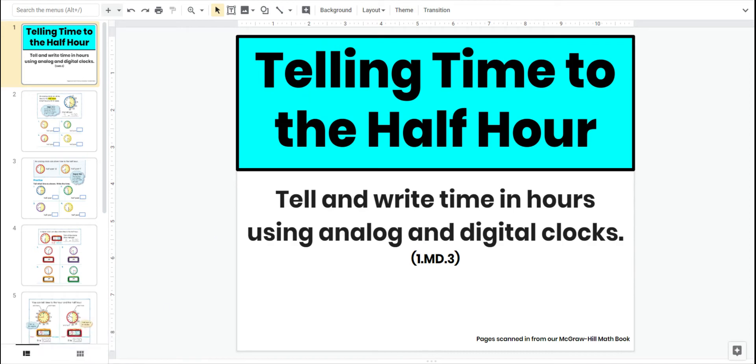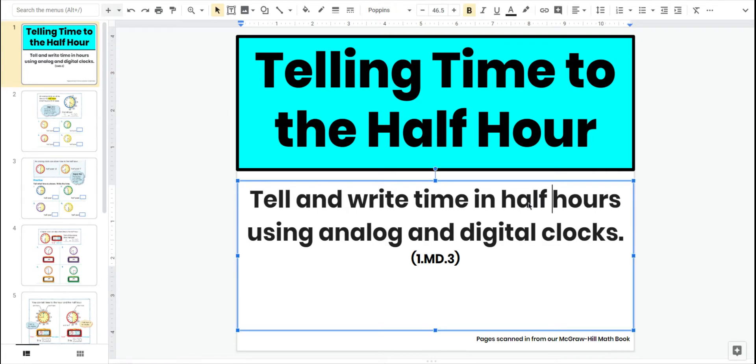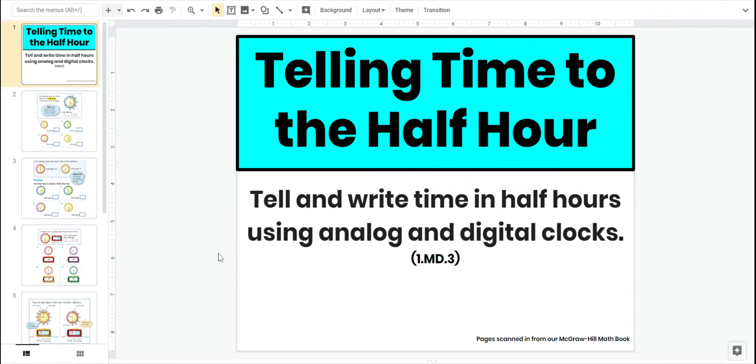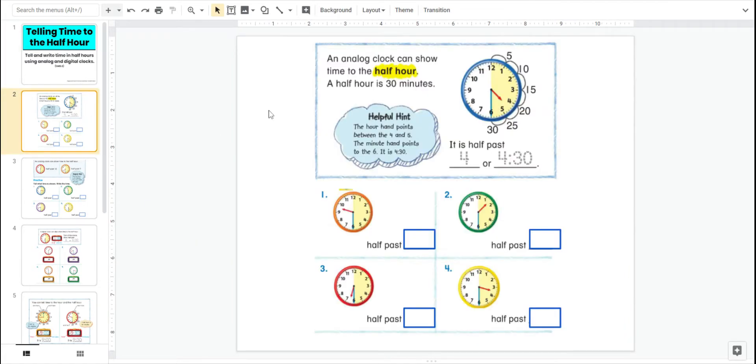Telling time to the half hour. Your goal is to tell and write times in half hours using analog and digital clocks. So let's go to our first page. It says an analog clock can show time to the half hour. Remember, an analog clock is a clock that has hands on it.